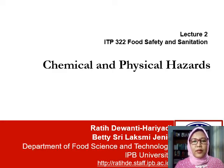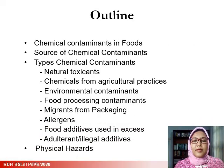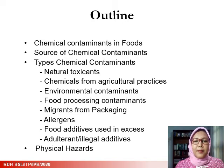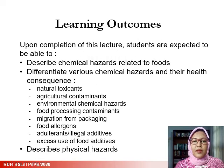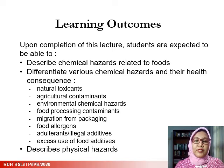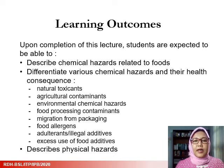Today we are going to discuss our second materials on chemical and physical hazards. These topics will cover chemical contaminants in foods, source of chemical contaminants, all types of chemical contaminants possibly occurring in food, and physical hazards. After completing this lecture, you are expected to be able to describe chemical hazards related to foods, differentiate various chemical hazards and their health consequences, and describe physical hazards.